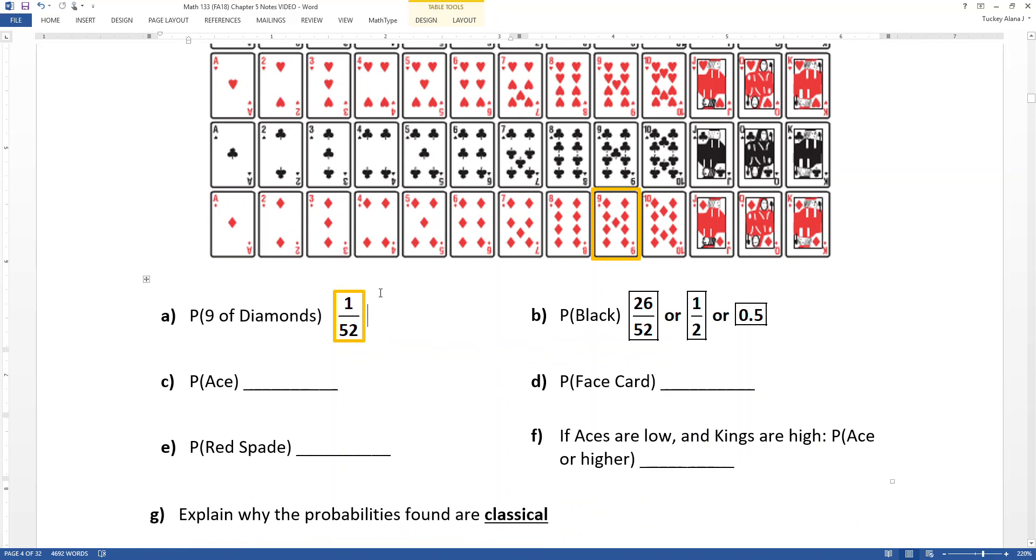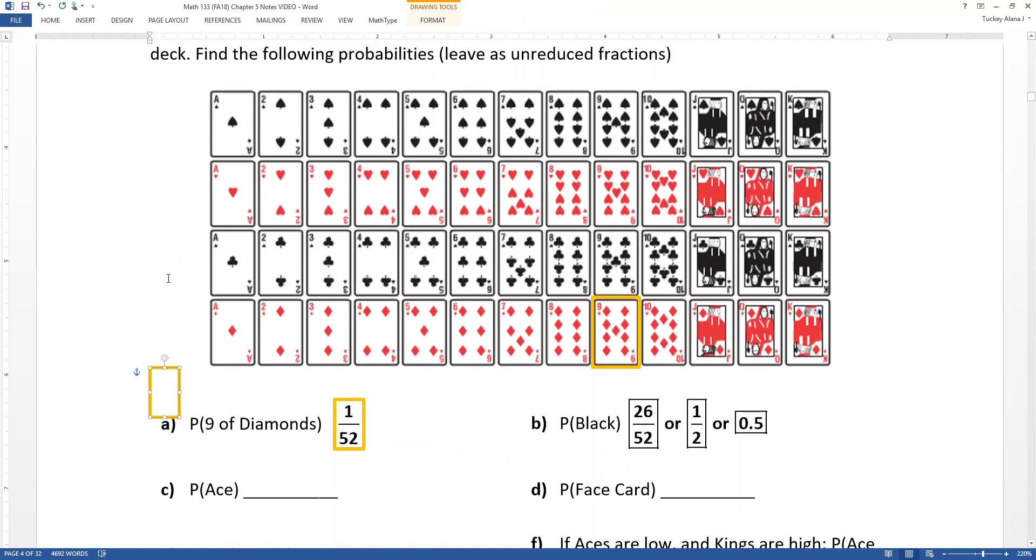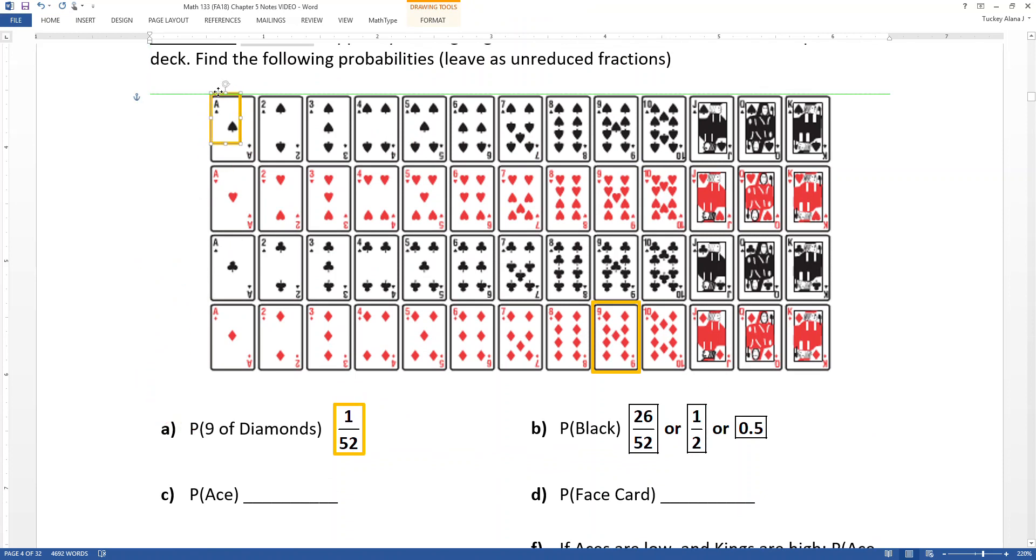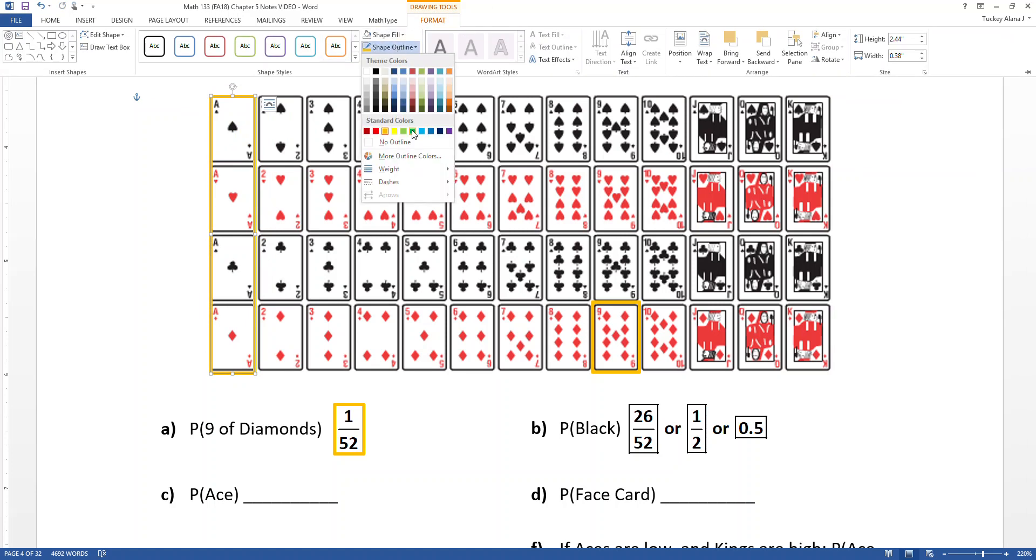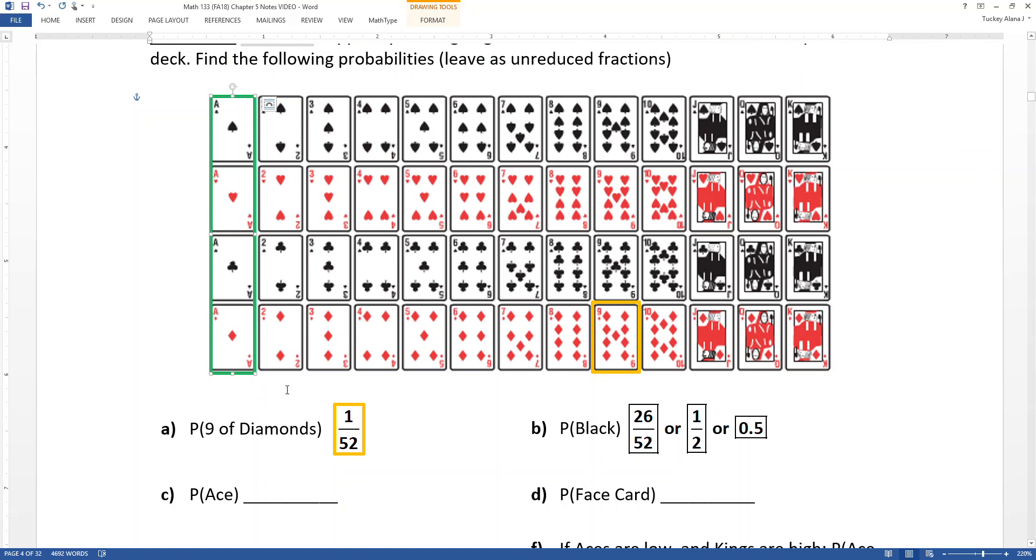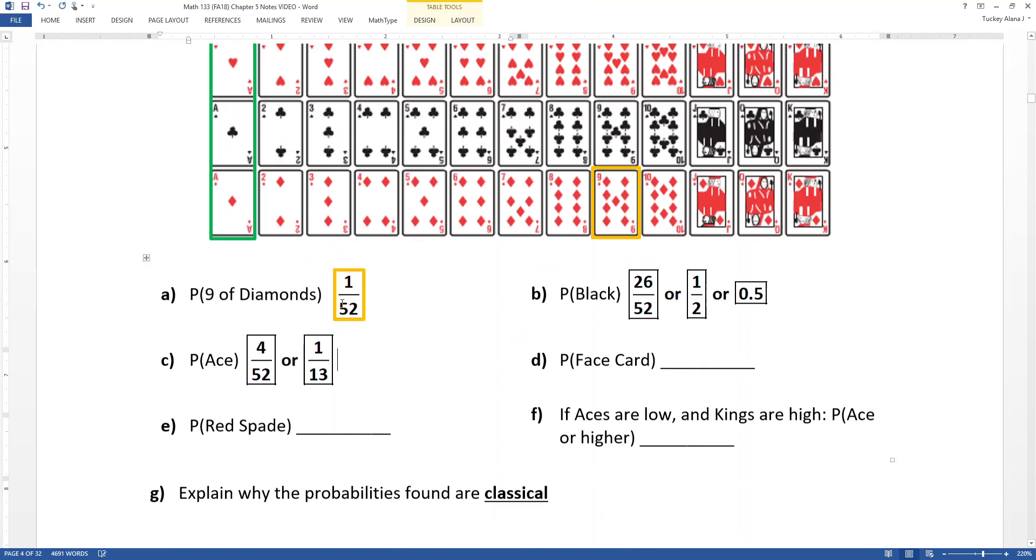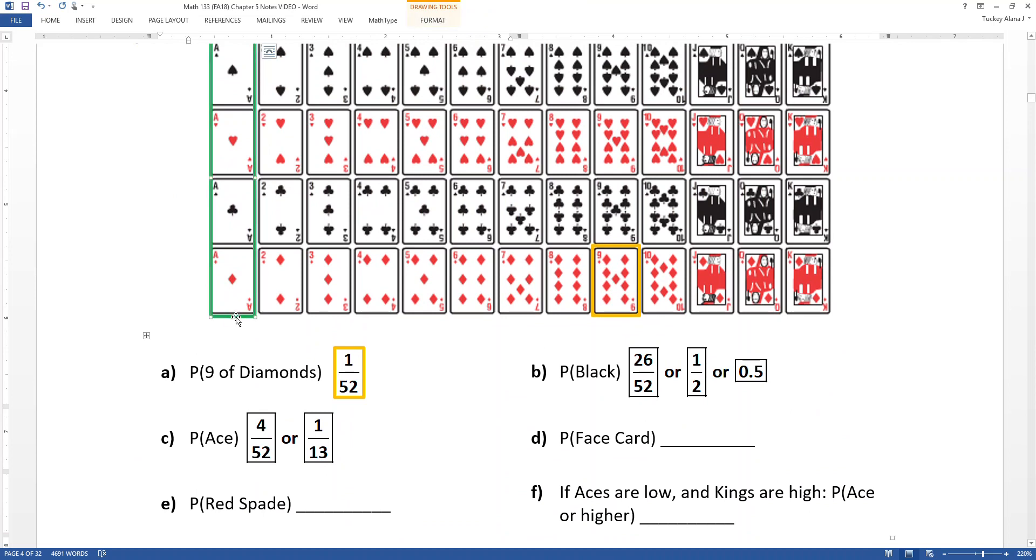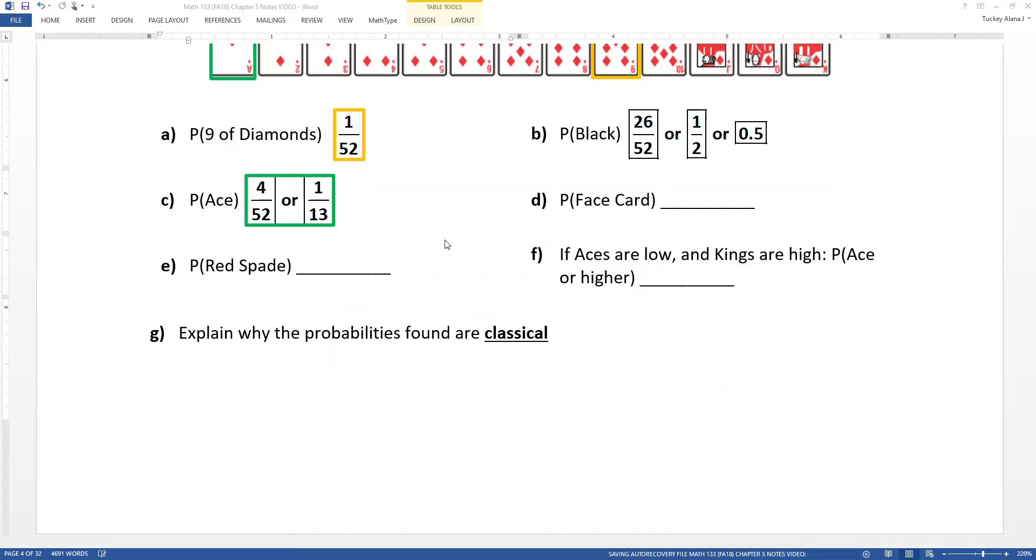Now an ace card. Aces are the ones in the card world. So they can be sometimes high, sometimes low. Sometimes they count as a one. Sometimes they count as higher than a king. It just depends on what game you're playing. So these are the aces right here. Let me make it a different color so you can see it. I'll pop them in green. There we go. So those are the aces. And you can see there's four of them. So that would be 4 out of 52, which is 1 over 13. Either one of those is fine. And again, if you want a decimal, you can do that too if you so desire. I'm just not going to bother. We all know how to grab a calculator and type 4 divided by 52.